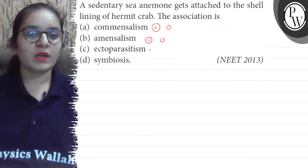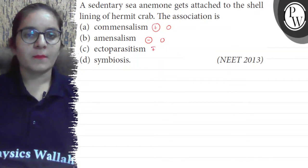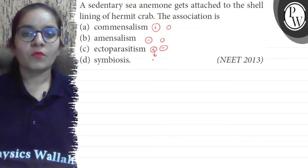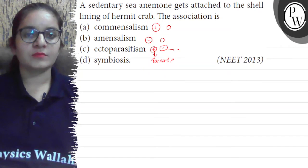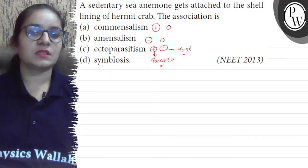Ectoparasite means when one species is getting harmed by the other — one is getting benefited and another is getting harmed. The parasite takes food from the host and harms the host. The parasite lives outside the body of the host — that is, ectoparasite: outside the body of the host.